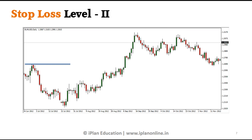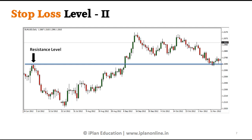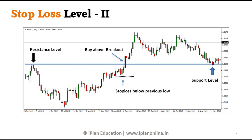Let's take another example. We see here a resistance level. In case you buy above a breakout — normally when there is a breakout above a resistance level, it is suggested that you can buy. However, you can take a stop loss at the previous low, not the previous candle, but the previous low which is a minor support that can work as a good stop loss. So instead of taking the previous candle as a stop loss, you should take at least the previous low as a stop loss. We also see another support level — if you buy there, you can take a stop loss below the support level.